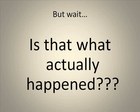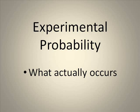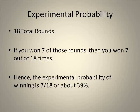But wait — is that what actually happened? No, probably not. You see, we conducted an experiment, and so our answers probably vary. This is known as experimental probability — it's what actually occurs when you conduct the experiment. So what is our experimental probability? Out of 18 rounds, how many did you win? Well, if you won seven rounds, then the experimental probability of winning is seven-eighteenths.